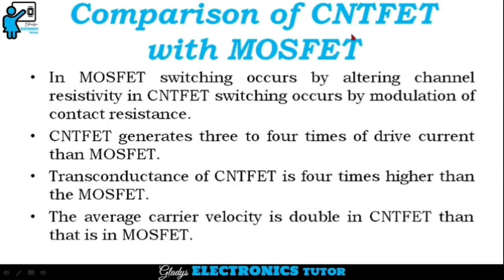Next, we'll see the comparison of CNTFET with MOSFET. In MOSFET, switching occurs by altering channel resistivity, while in CNTFET, switching occurs by modulation of contact resistance. CNTFET generates three to four times more drive current than MOSFET, and the transconductance of CNTFET is four times higher. The average carrier wall velocity is double in CNTFET compared to MOSFET.